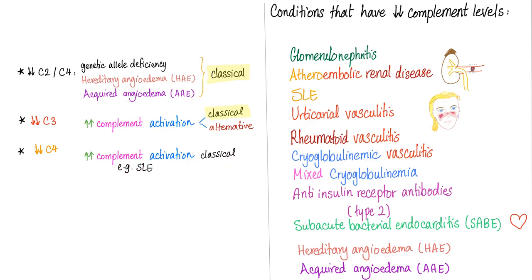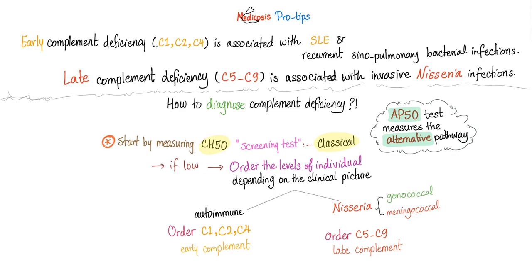In cases of systemic lupus, you can have decreased C3 and/or decreased C4 in the plasma. Conditions associated with hypocomplementemia are either autoimmune or infectious. Early complement deficiency is associated with lupus, while late complement deficiency is associated with Neisseria infections.